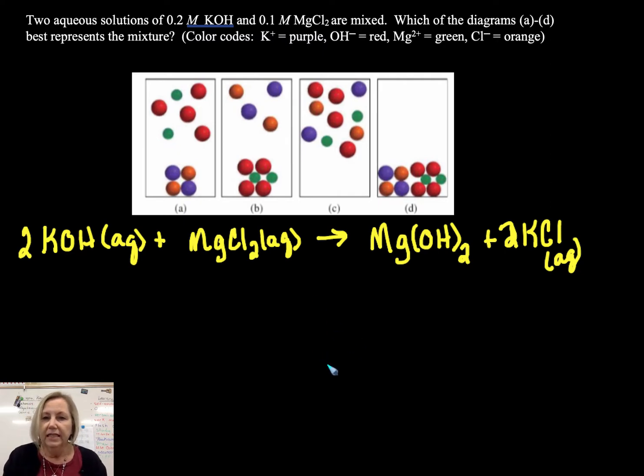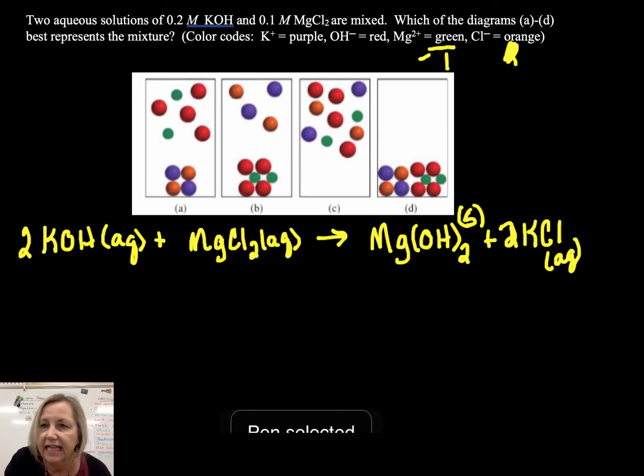Okay, so all hydroxides are soluble except group 1 and group 2. Well, let me rephrase that. The group 1 and group 2 hydroxides are all soluble except magnesium and beryllium. So magnesium hydroxide would most likely be predominantly in the solid phase. KCl would be aqueous.